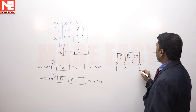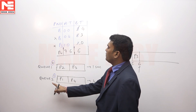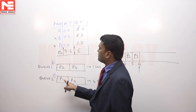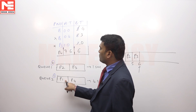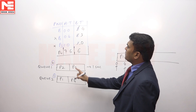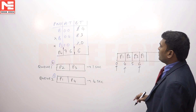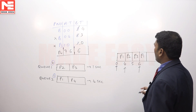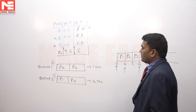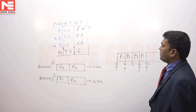At time 6, P4 is still not available. So we take P1 from Q2. P1 requires 4 more units. Executing P1 for 4 units brings the time to 10, and P1 completes its total execution. Present time is now 10.